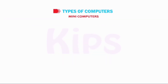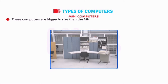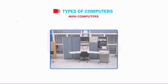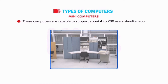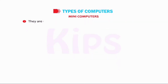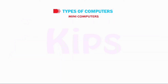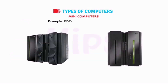Mini Computers: these computers are bigger in size than microcomputers, typically being the same size as a refrigerator. They have a higher processing speed and are costlier than microcomputers. These computers are capable of supporting about 4 to 200 users simultaneously. They are used in banks, universities and other big organizations. Examples include PDP-8, HP-2100 and micro-VAX-3100.